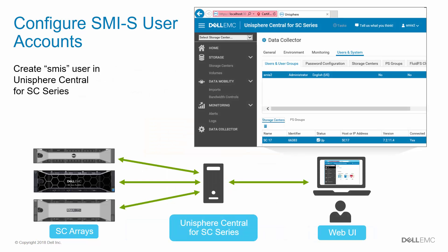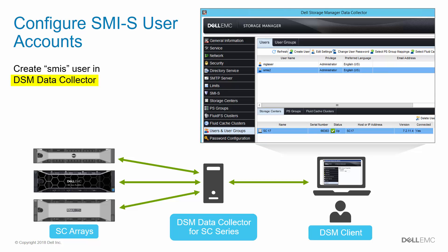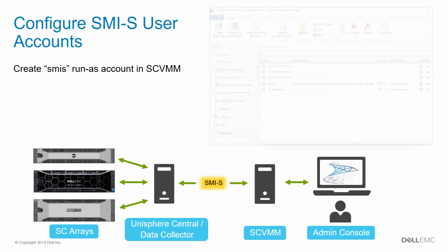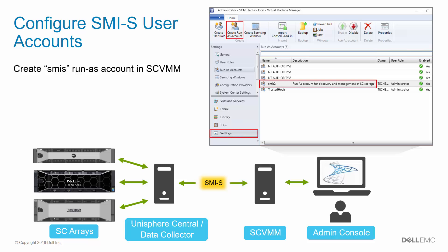Let's take a closer look at how these user accounts are created, starting with the SC side. If you are using Unisphere for SC Series, create an SMIS user and grant this user administrator access to at least one SC array. In this example, as shown under the Data Collector settings, the user is named SMIS2 and is granted admin access to a storage center named SC17. If you are using the DSM Data Collector, the process is very similar except for a different user interface. As shown under Users and Groups, the SMIS user is listed with admin access granted to SC17.